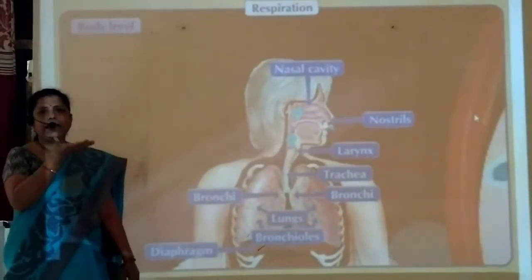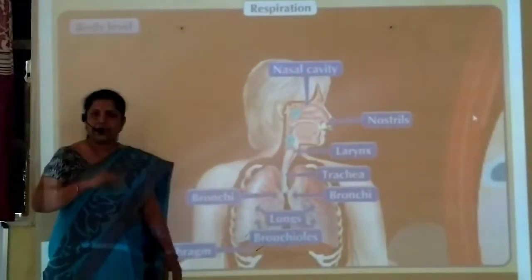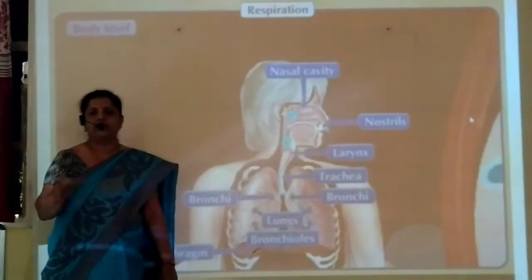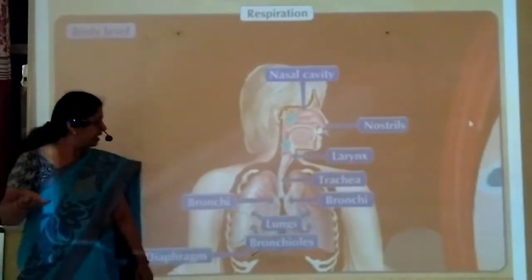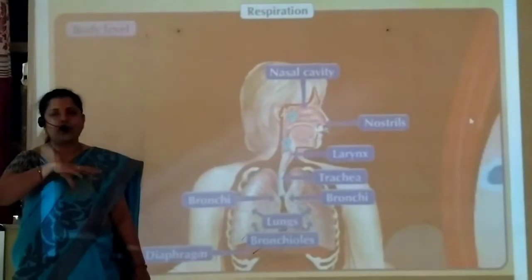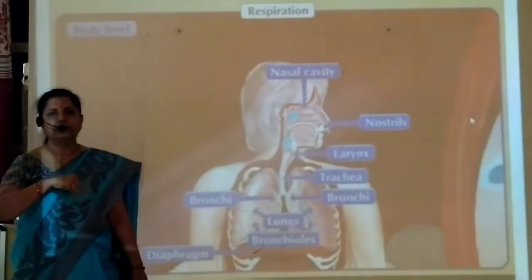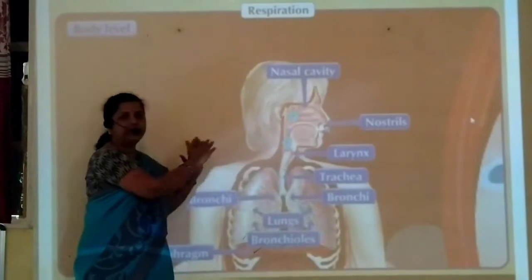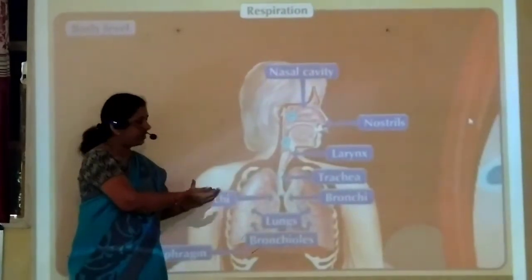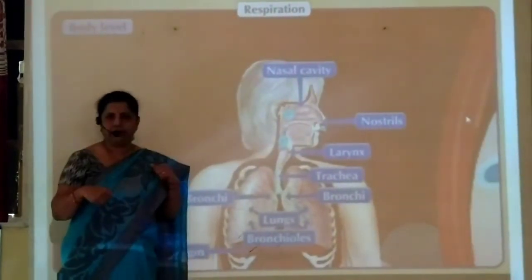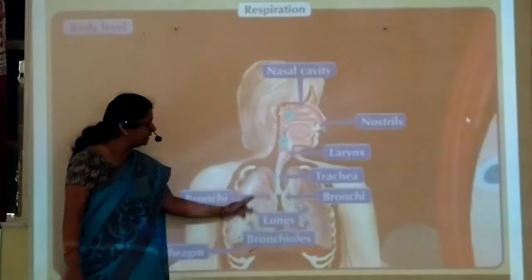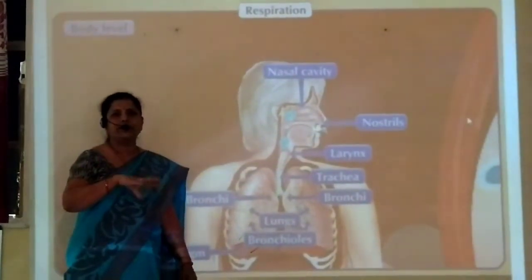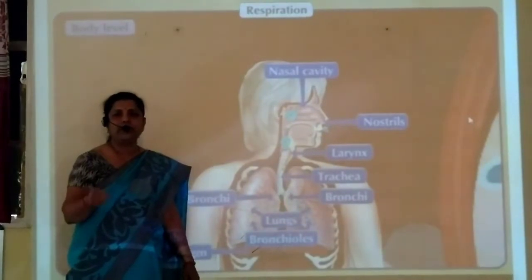Contraction and relaxation of the diaphragm help in inhalation and exhalation of oxygen and carbon dioxide. When the diaphragm contracts, the volume of the thoracic cavity increases, air pressure inside the lungs decreases, and air is inhaled. Oxygen from that air is then absorbed into the blood.